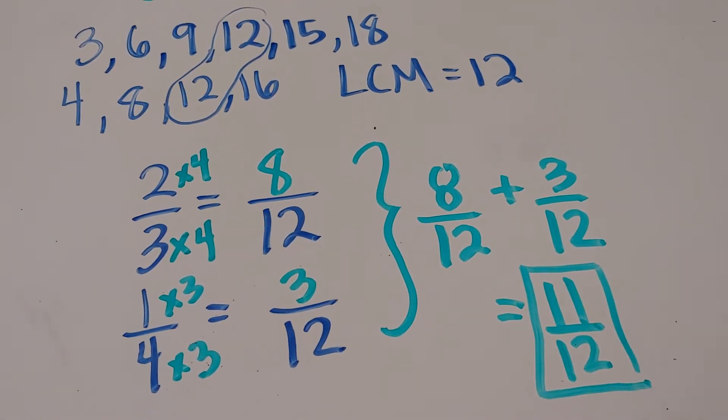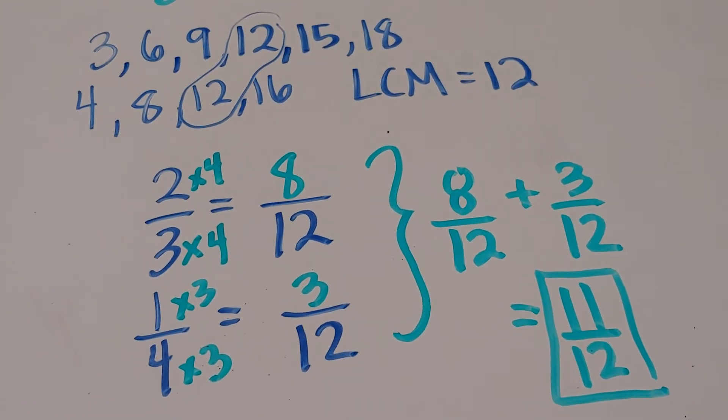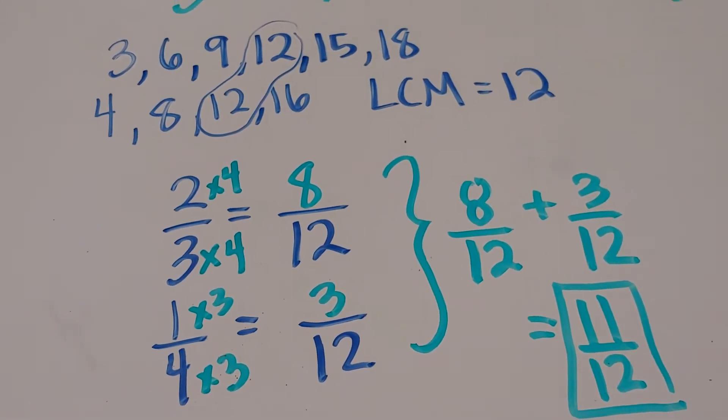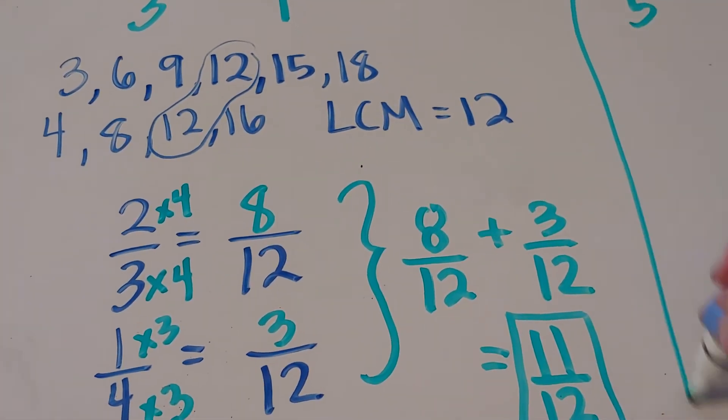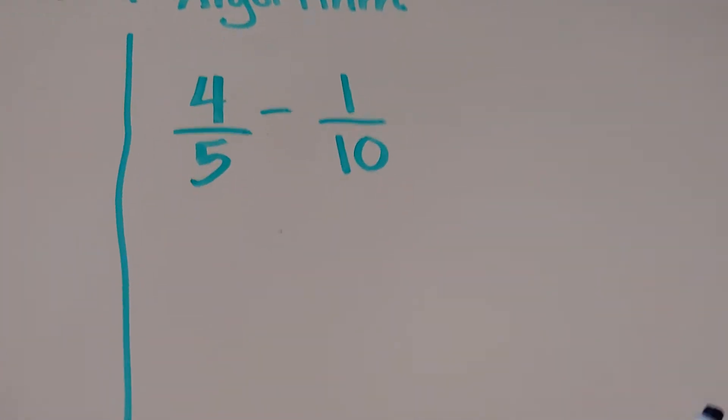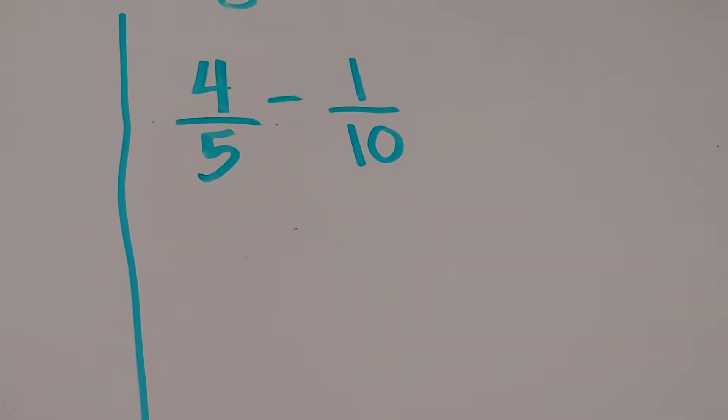So that's the standard way to add fractions without using an area model. We're going to try that again over here now with a subtraction problem. So this time it's 4 fifths minus 1 tenth.